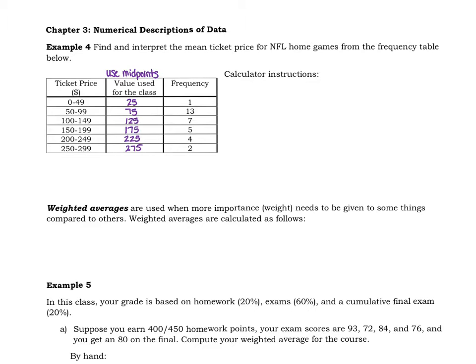You use the midpoints of all of the classes as the approximate value for the ticket in that category. Again, some will be a little more, some will be a little less, but in the end it's going to roughly balance out to that value. Let's you work with the numbers a little bit better.